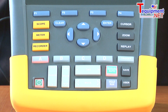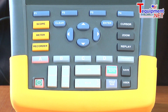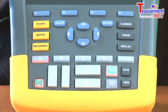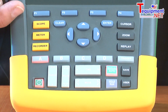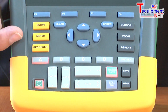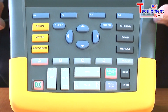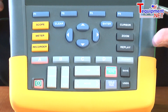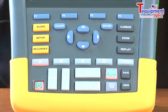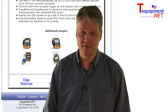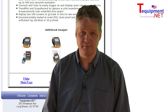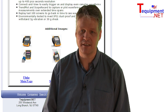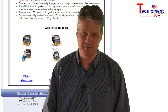That provides us with a very quick overview of the new 190 series scope meter and each of the key operating modes: the scope, the meter, the recorder, the cursor, the zoom, and the 100-screen replay mode. If you need any further information, please contact your TiEquipment product specialist.